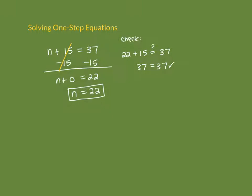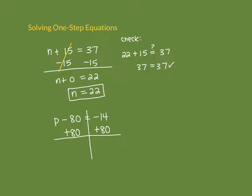Now let's do one with subtraction: p minus 80 equals negative 14. This equation says I took some number p, subtracted 80, and got negative 14. To undo this, since I took 80 away, I want to add 80 back to both sides. A good strategy is to draw a line through your equal sign so you don't lose it and remember you're doing the same operation to both sides.